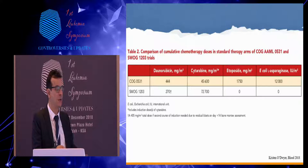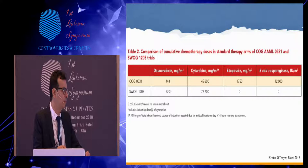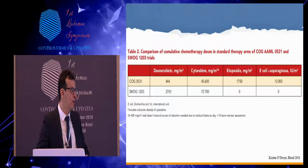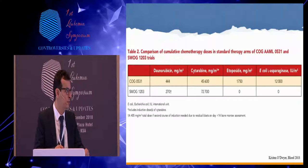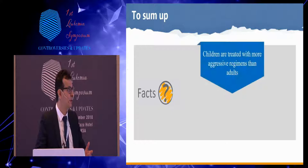Comparing cumulative doses of different drugs: for daunorubicin we are using much more in pediatric, reaching up to 450 mg, compared to 270 mg in the adult trial. Cytarabine is much higher in the adult group compared to children. Etoposide and L-asparaginase are not used in adults but are used in pediatric consolidation. To sum up, children are treated with a more aggressive regimen in terms of different drugs.